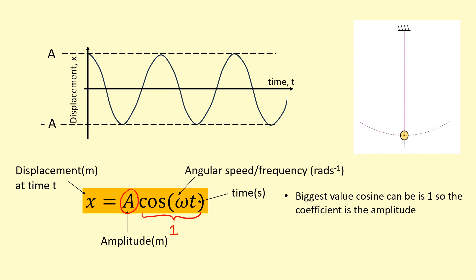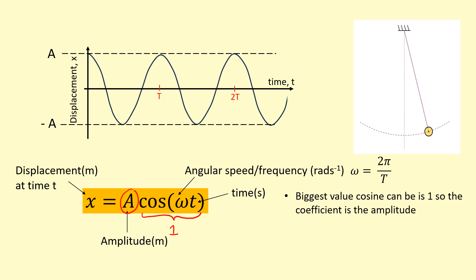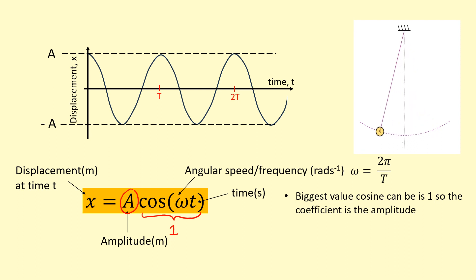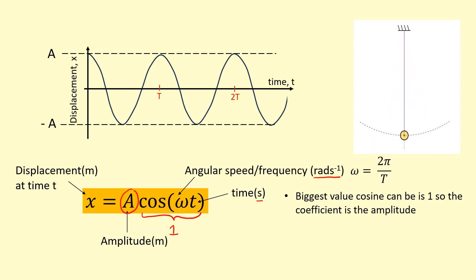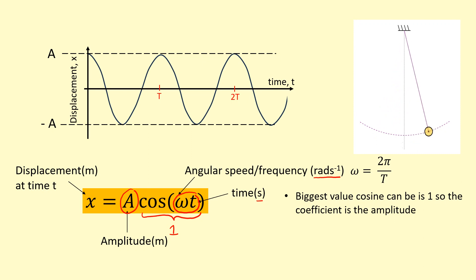Angular frequency ω can be determined using this equation, or using the time period, which you can read off the graph — it's the time taken for one complete oscillation. You can also measure several oscillations and divide by the number of oscillations. Note that ω in radians per second multiplied by t in seconds gives an argument in radians, so you must set your calculator to radian mode, otherwise you'll get the wrong answer.